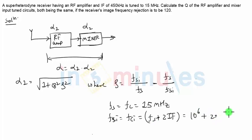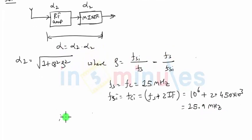So this will be 10 to the 6, which is FS, plus twice of IF. IF given is 450 kilohertz, so 2 times 450 times 10 to the 3, and this will come out to be 15.9 megahertz. So that's my FSI.